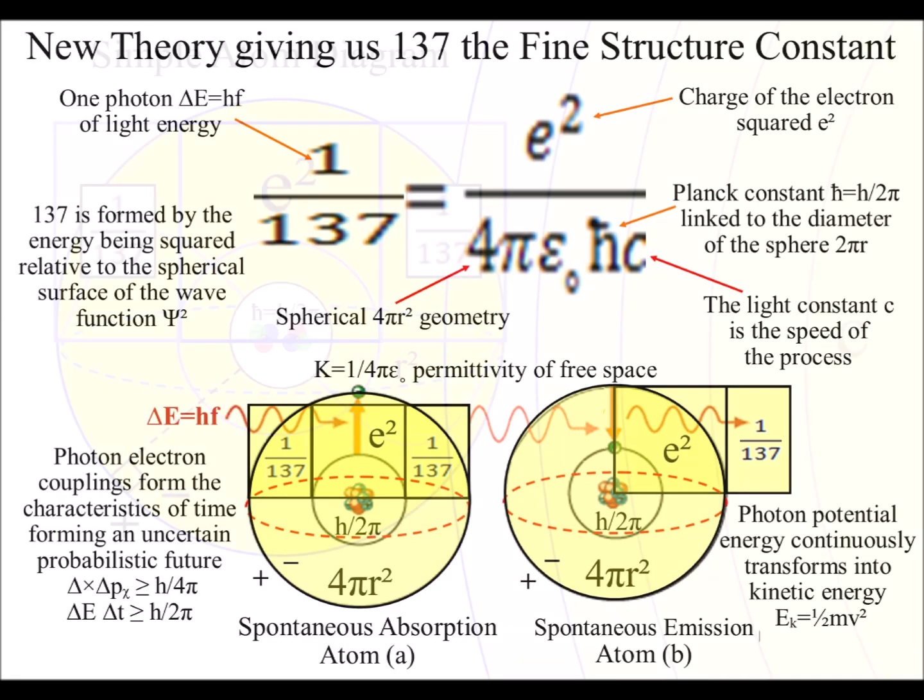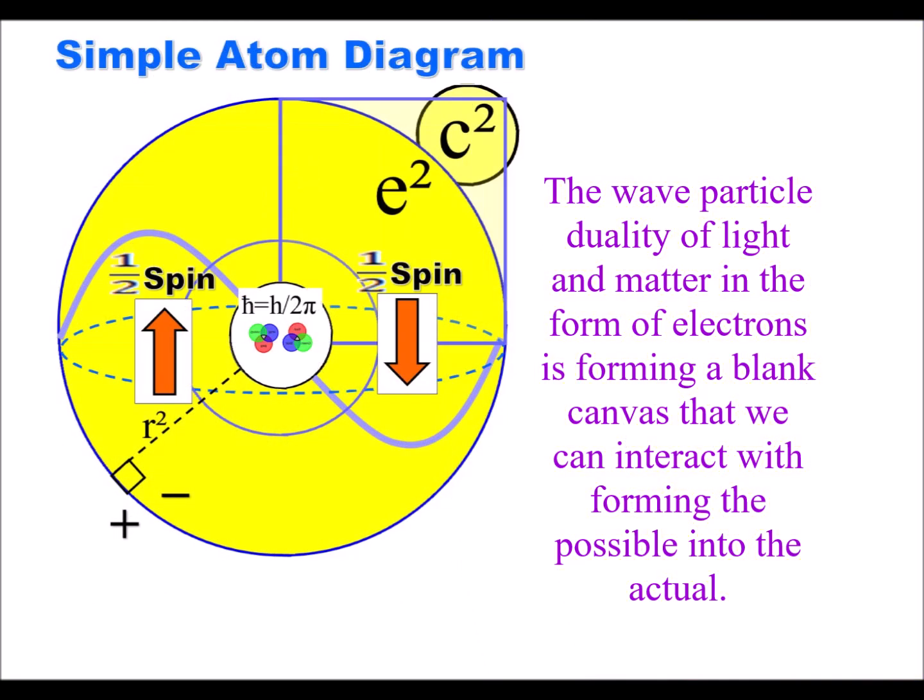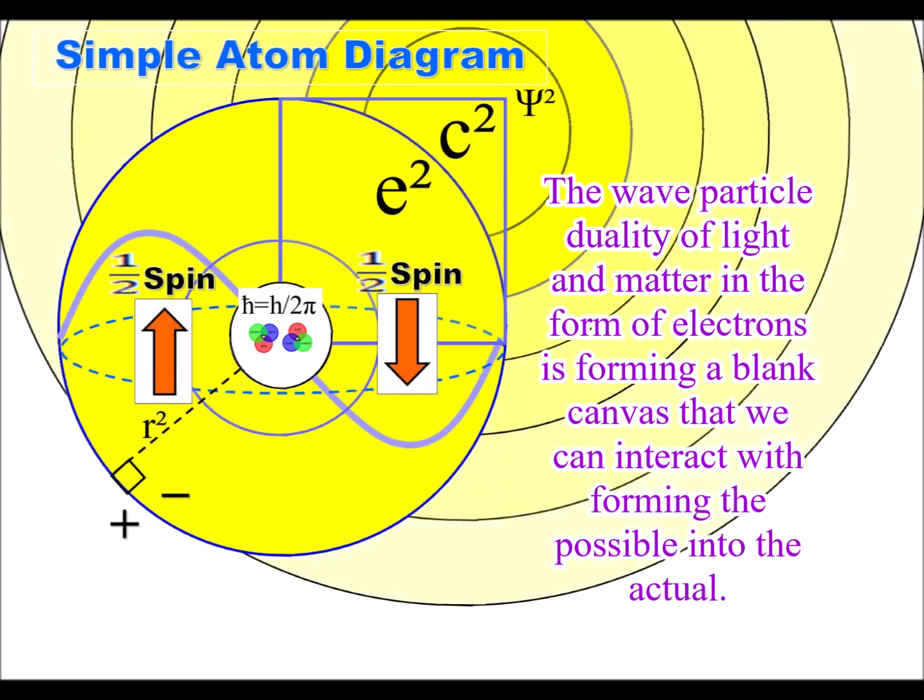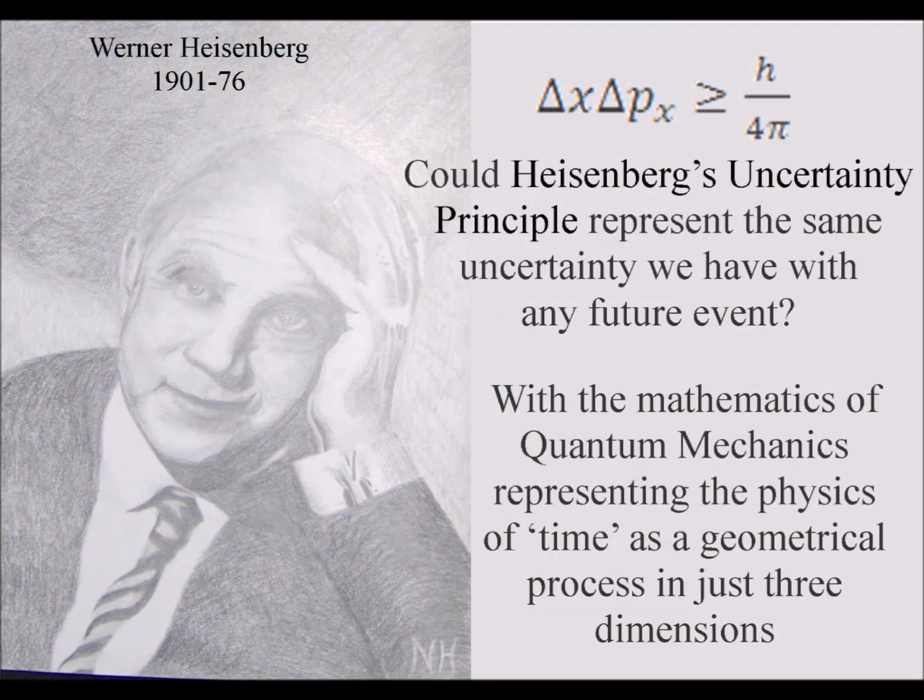The absorption of light is followed by the emission of a new light wave that forms a probabilistic uncertain future that can be seen mathematically as Heisenberg's uncertainty principle.